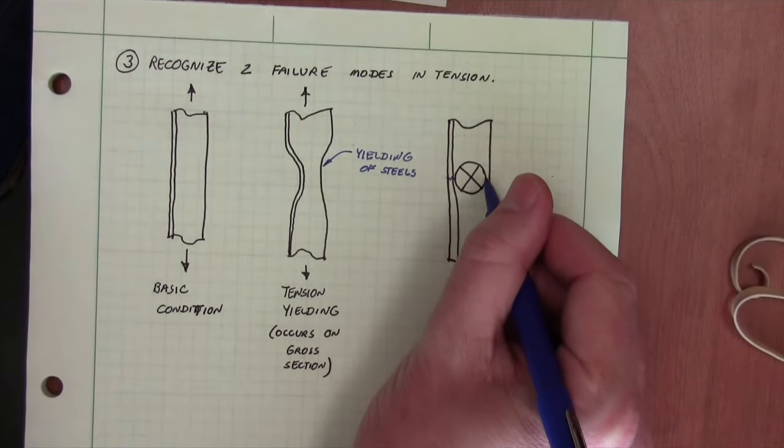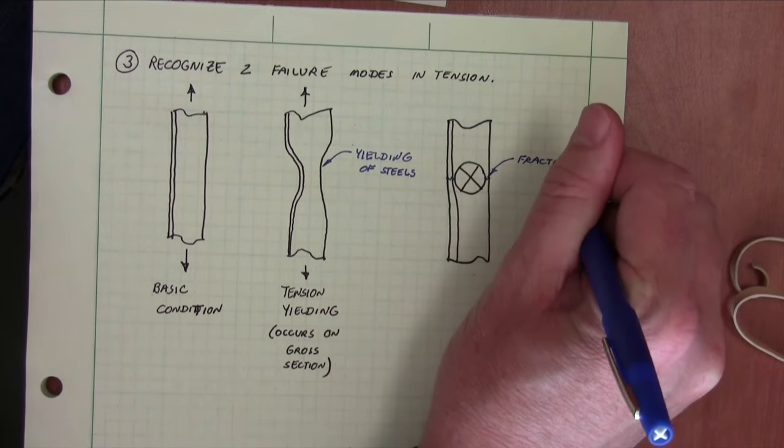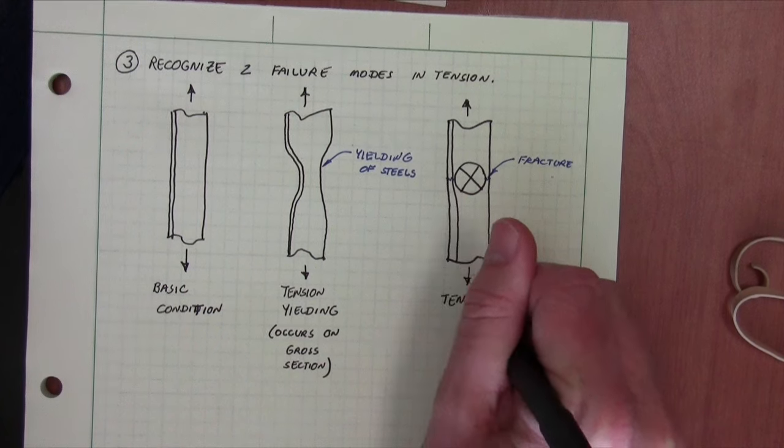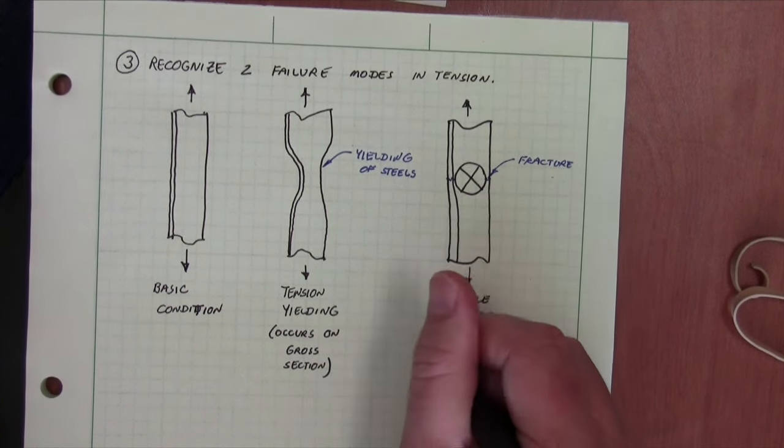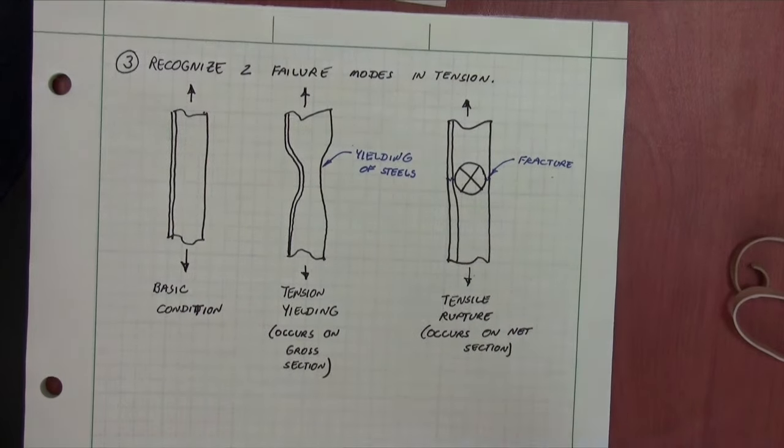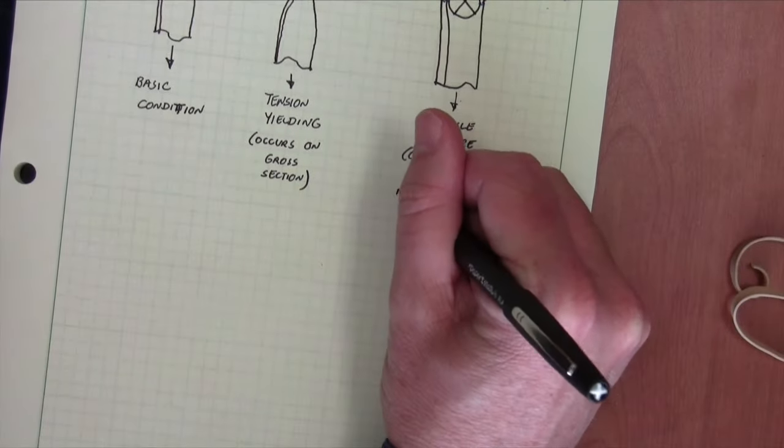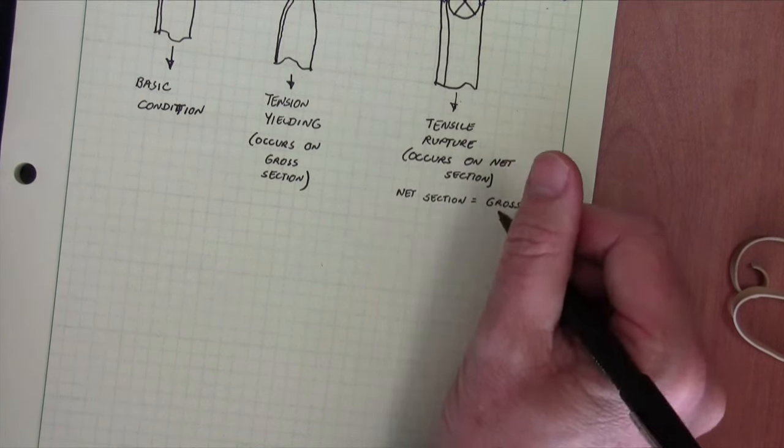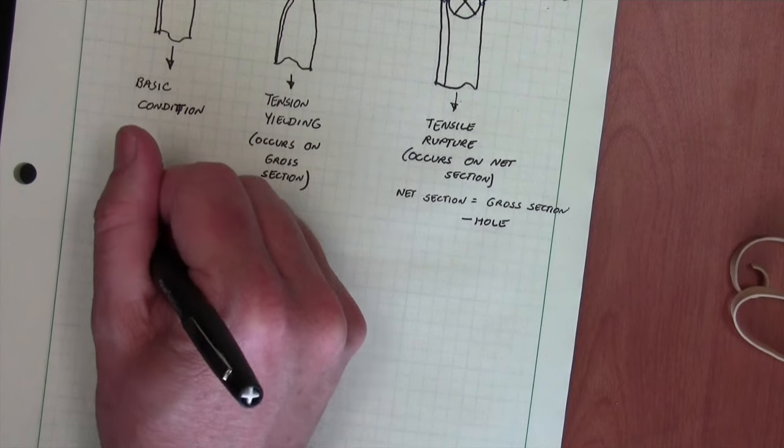And we would sketch this by showing ripping of the steel section off the holes. And again, tension is applied here. And this is called tensile rupture or rupture on the net section. This occurs on this area of the steel that does not include the hole. So the gross area less the area of the hole.